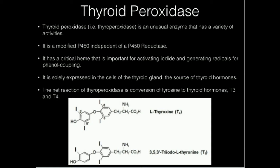A major enzyme involved in this process is called thyroid peroxidase, sometimes referred to as thyroperoxidase for short, with the abbreviation TPO. Thyroid peroxidase is a modified cytochrome P450, but it's independent of a P450 reductase, because all the electrons it needs are ultimately from hydrogen peroxide.